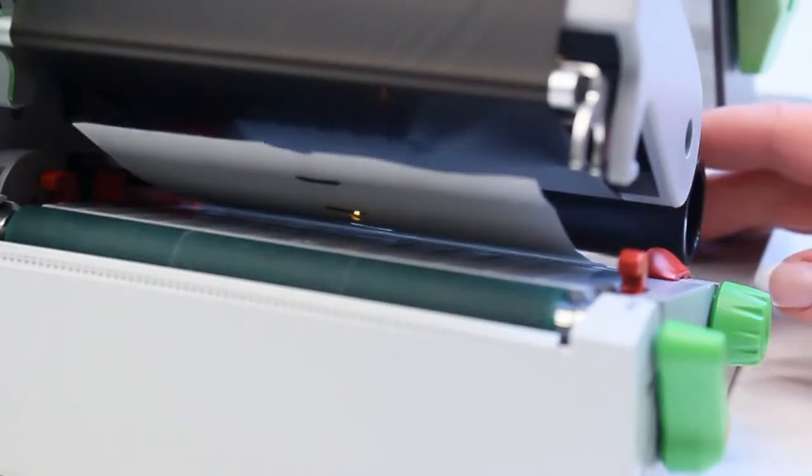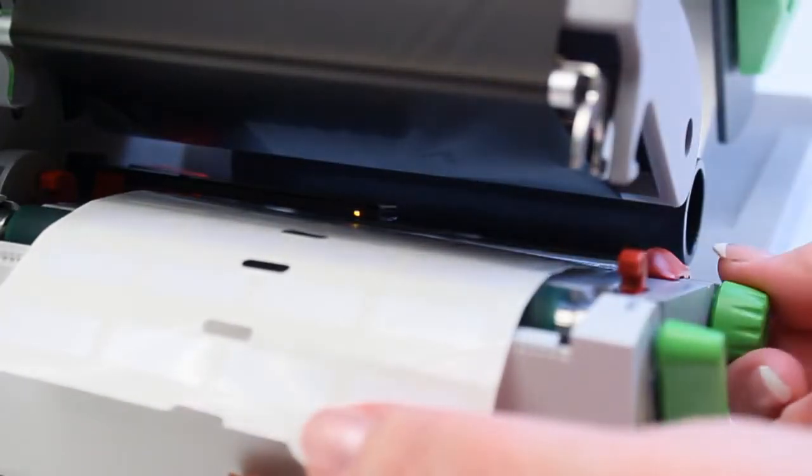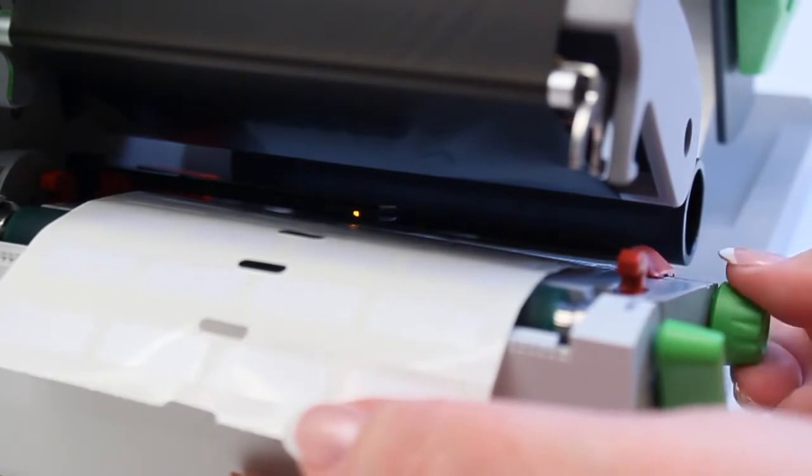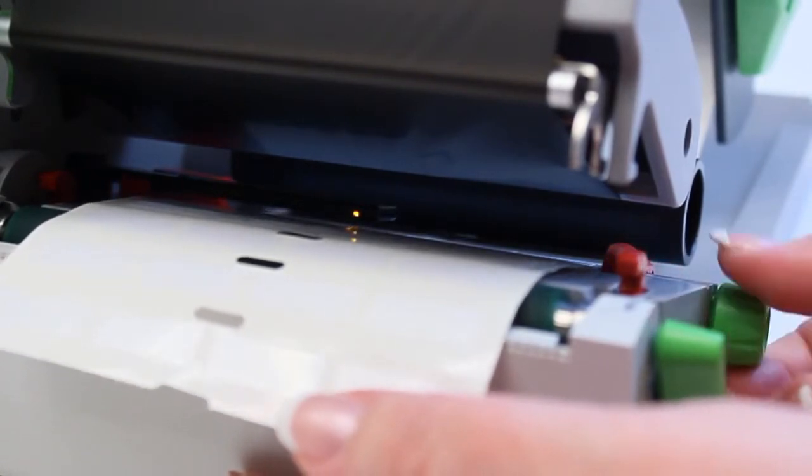Thread the material under the printhead, ensuring it is not covering up the optical sensor. Then adjust the red guides to the width of the material using the green knob.